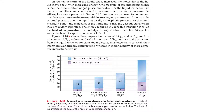As the temperature of the liquid phase increases, the molecules of the liquid move about with increasing energy. One measure of this increase in energy is that the concentration of gas phase molecules over the liquid increases with temperature. These molecules exert a pressure called the vapor pressure. We'll explore vapor pressure in Section 11.5. For now, we just need to understand that the vapor pressure increases with increasing temperature until it equals the external pressure over the liquid, typically atmospheric pressure. At this point, the liquid boils.